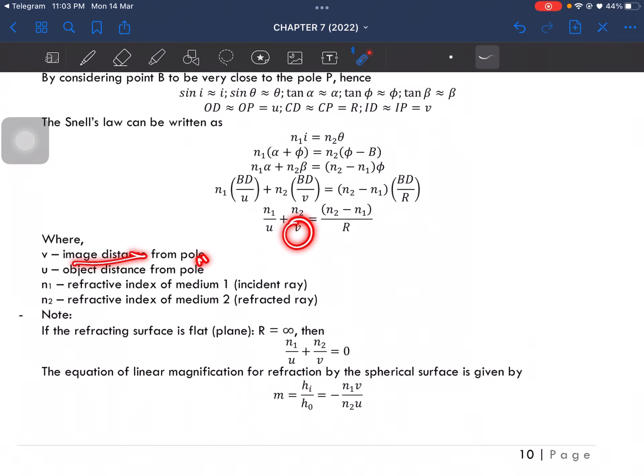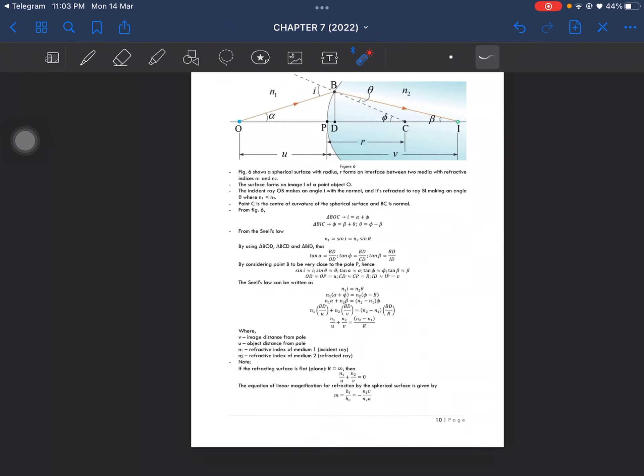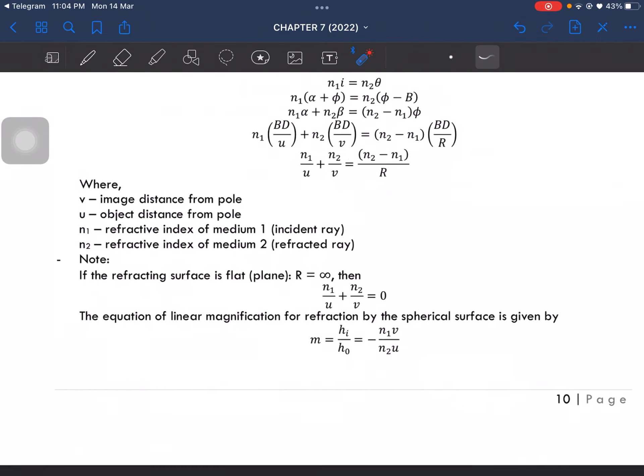So v here is the image distance from the pole. The pole is at the center of the mirror, and u is the object distance from the pole as well. n1 is the refractive index of the first medium, which is the medium where the incident ray is, and n2 is the refractive index of medium 2, which is where the ray is being refracted.